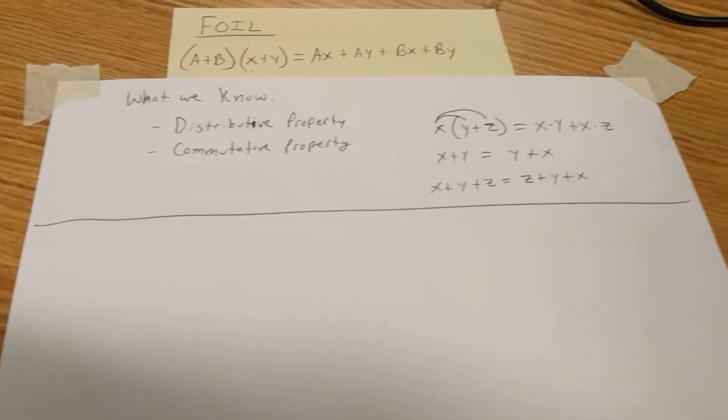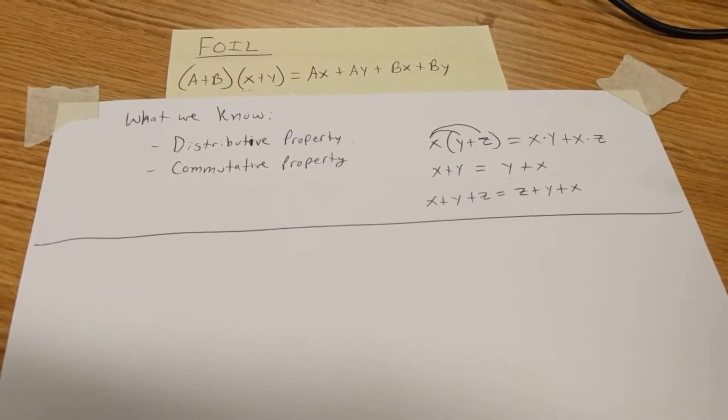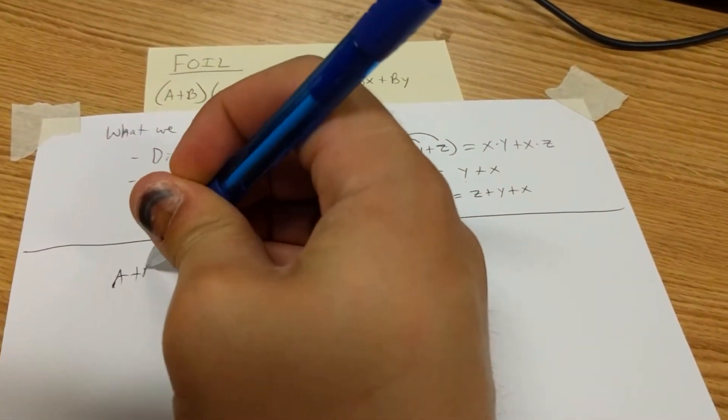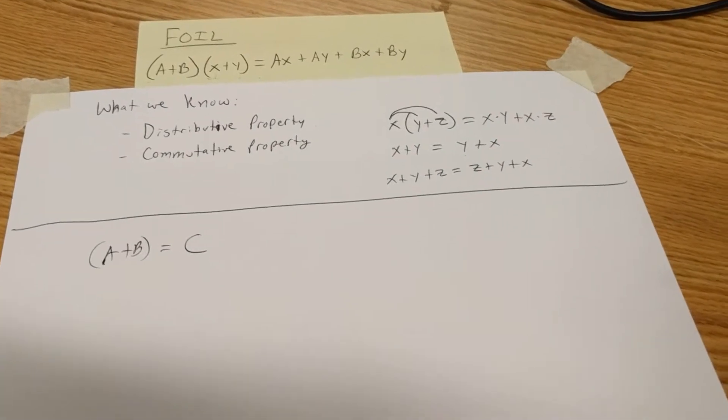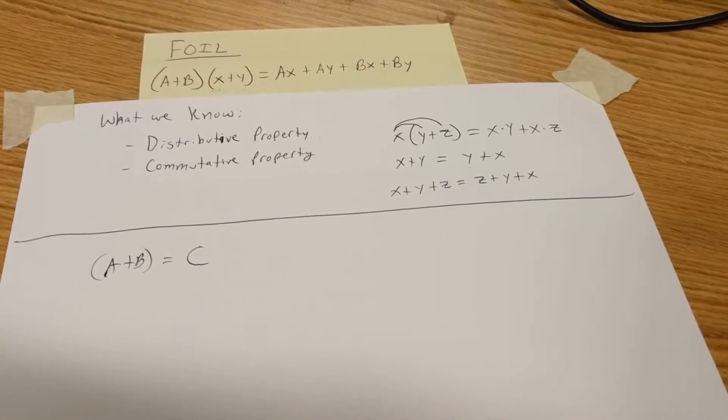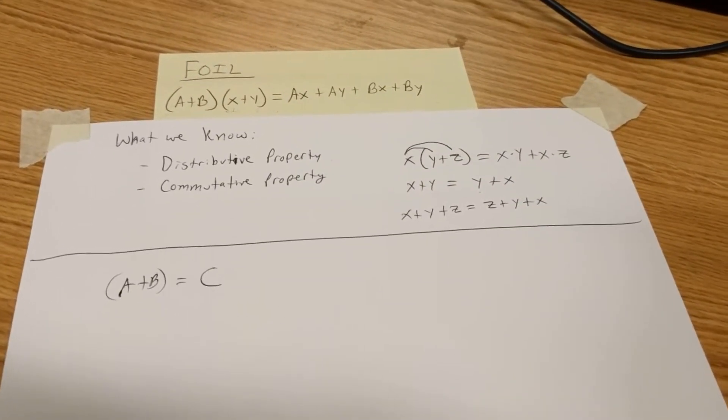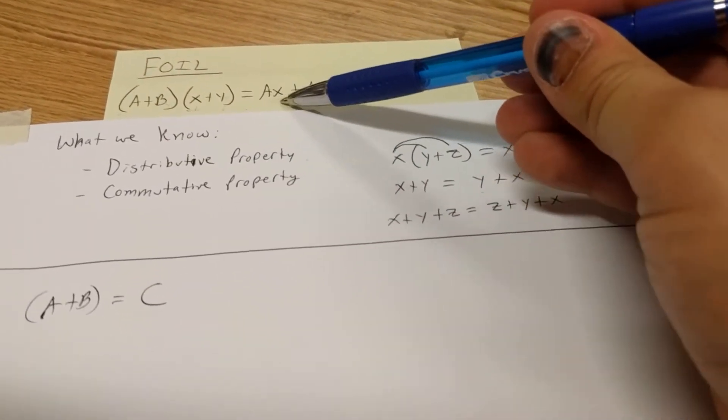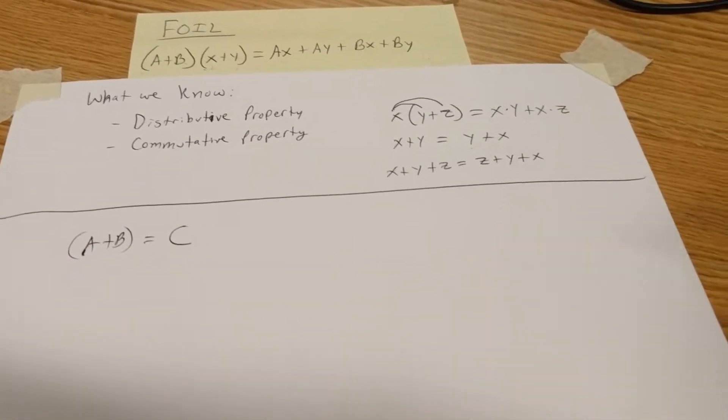Now that we're ready to start our proof, we're going to take a plus b, and let's just say that's equal to some number or letter c. It doesn't really matter what letter we choose. We're going to choose c because it comes next in the sequence. So using our original FOIL method, we're going to prove that a plus b times x plus y gives us ax plus ay plus bx plus by using this substitution.